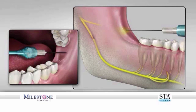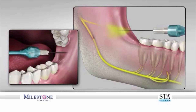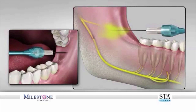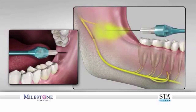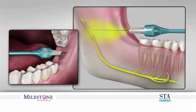Slowly advance the wand handpiece and simultaneously rotate the handpiece using a clockwise and counter-clockwise motion, which is called the bi-rotational insertion technique. This technique will minimize needle deflection, resulting in more accurate placement of the needle tip to the intended target. Advance the needle until bone is contacted. The final target is the medial aspect of the ramus within the infratemporal fossa.